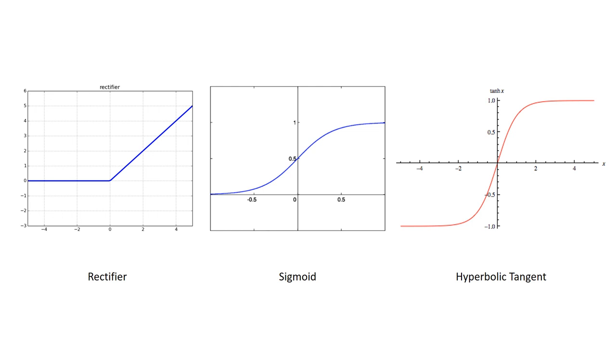The other symbol is the hyperbolic tangent, and it is the same as sigmoid, but extends into the negatives.